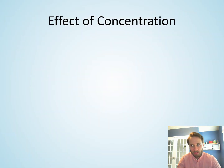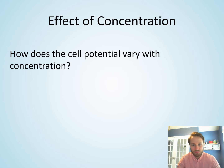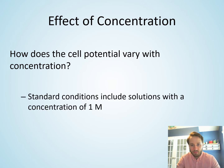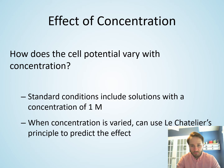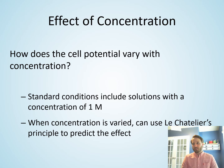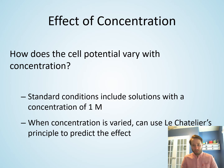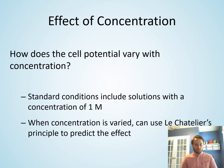Now, what if we change the concentrations? Let's consider how cell potential varies with concentration. If I have a cell potential under standard conditions and I vary the concentrations, Le Chatelier's principle tells us whether the reaction shifts toward reactants or products. For example, if I reduce the concentration of one of the reactants, Le Chatelier's principle says the reaction shifts left, forming more reactants, which lowers the cell potential.